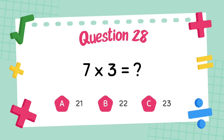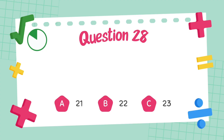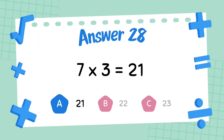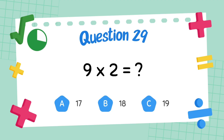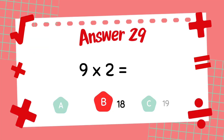What is 7 multiply 4? What is 7 multiply 3? The answer is 3. What is 8 multiply 5? What is 9 multiply 5? The answer is 8.